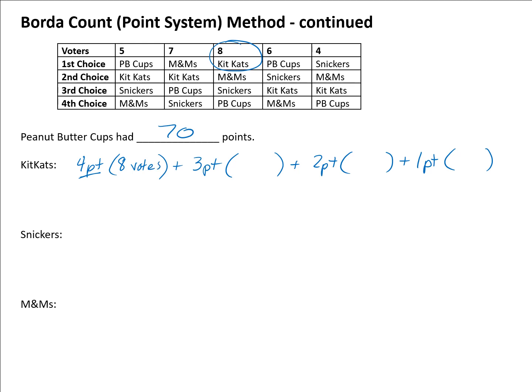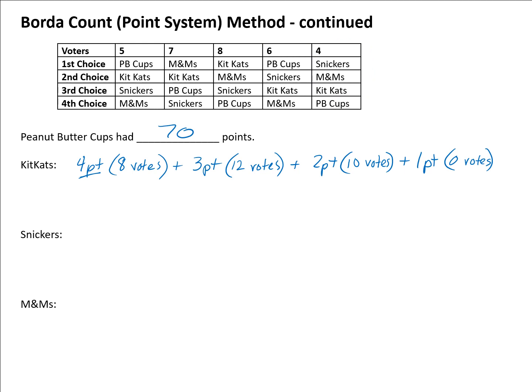For third choice, there are six and four votes, so ten votes for Kit Kats in third place. Looking at fourth choice, there are zero votes for Kit Kats in last position. I recommend using an eraser when marking up your preference schedule, since you'll need to do this for each candidate and don't want permanent marks causing confusion.